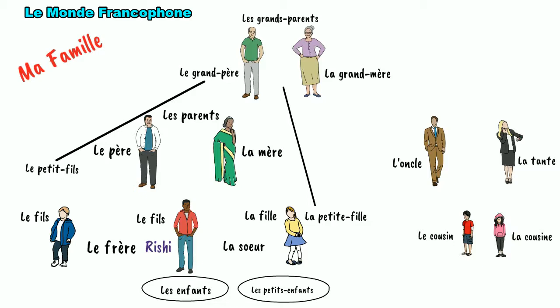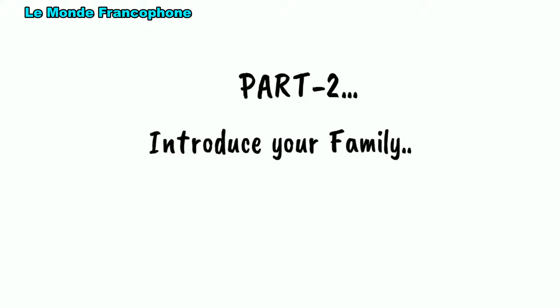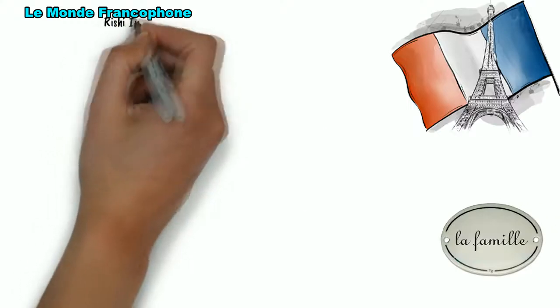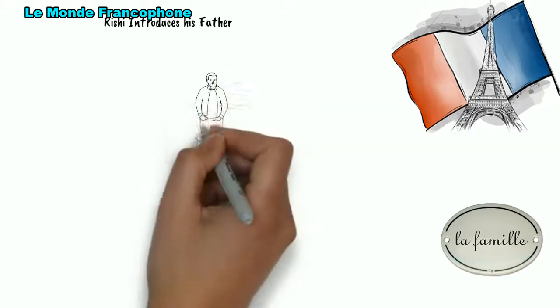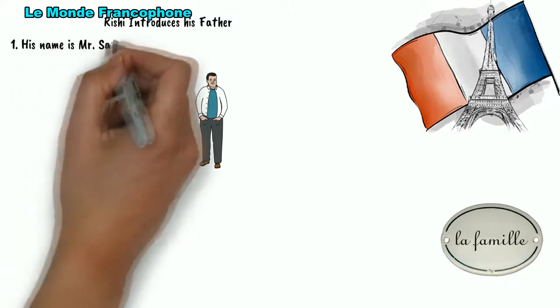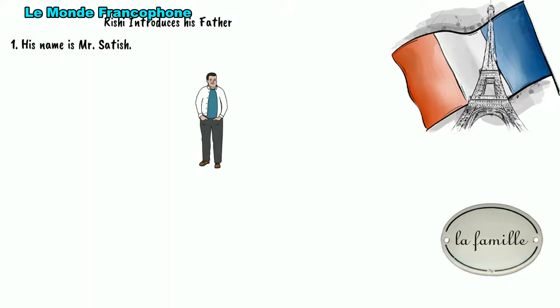You have clearly understood the relations among various family members and how to tell them in French. Now comes part 2 of our video. If I ask you to introduce your father to us, how are you going to do that? Let's continue with Rishi. If Rishi wants to introduce his father to us, let's suppose Rishi's father's name is Satish. So he would say: Mon père s'appelle Satish. Mon père s'appelle Monsieur Satish. Monsieur means mister in French.